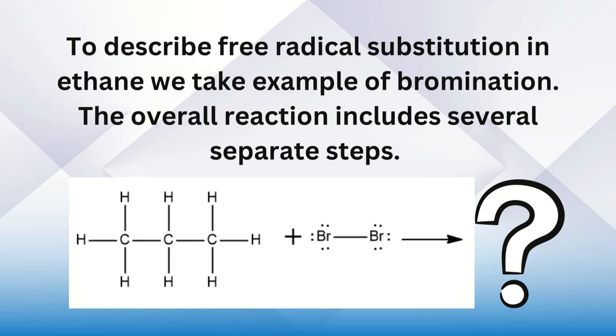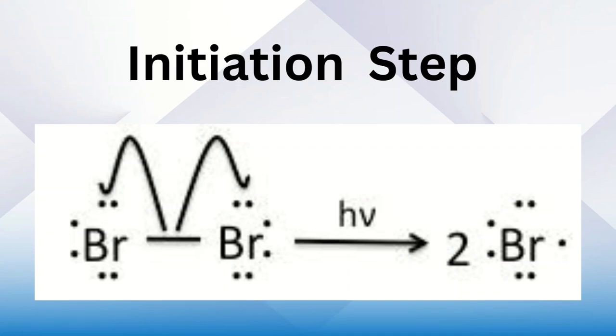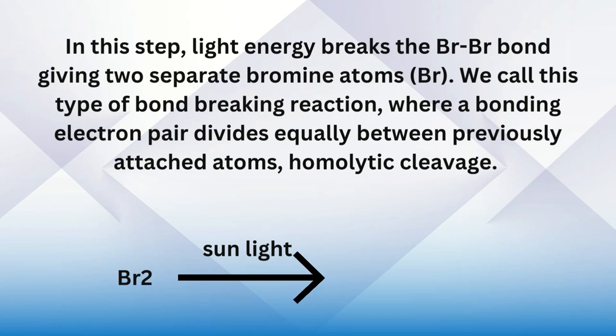Step number one is the initiation step. In this step, light energy breaks the bromine molecule bond between bromine and bromine atoms, giving two separate bromine atoms. We call this type of bond-breaking reaction, where a bonding electron pair divides equally between previously attached atoms, hemolytic cleavage. The reaction occurs in the presence of ultraviolet light or sunlight. Br₂ breaks down into bromine radicals.